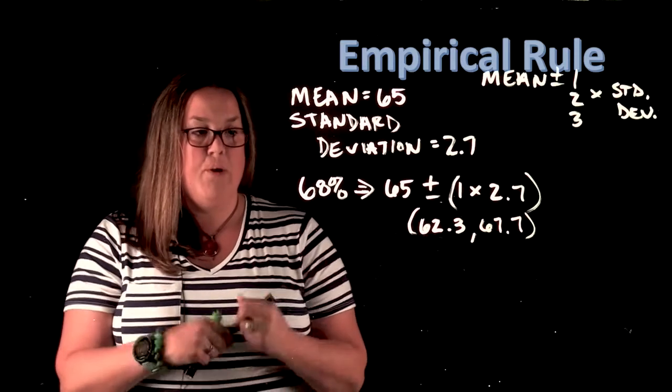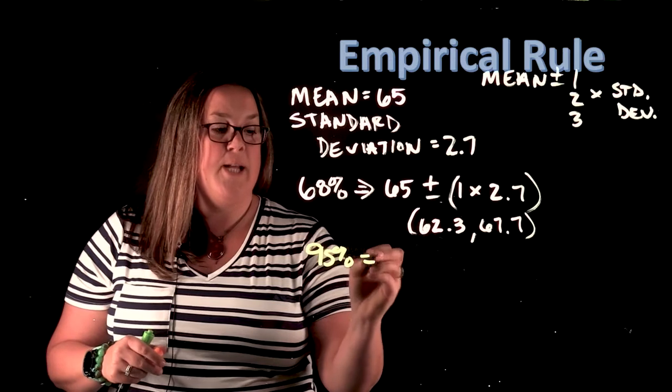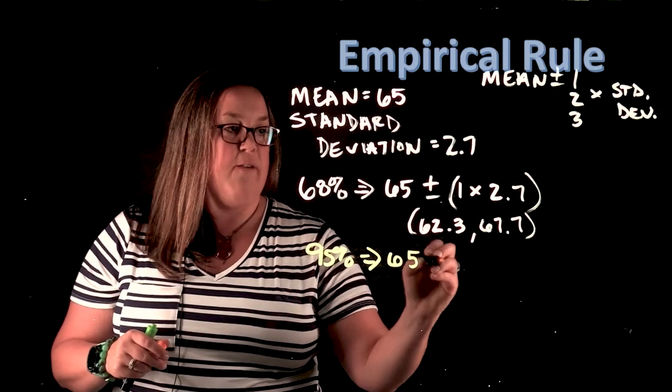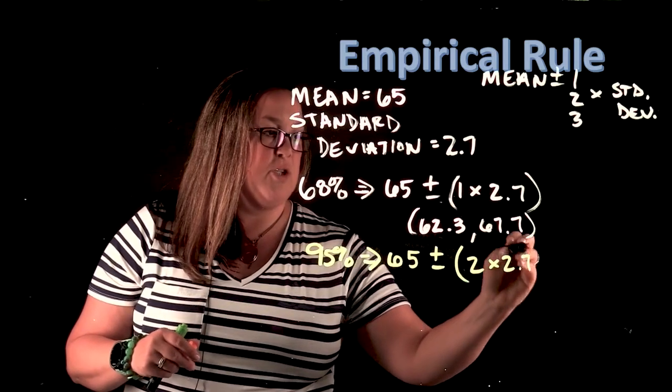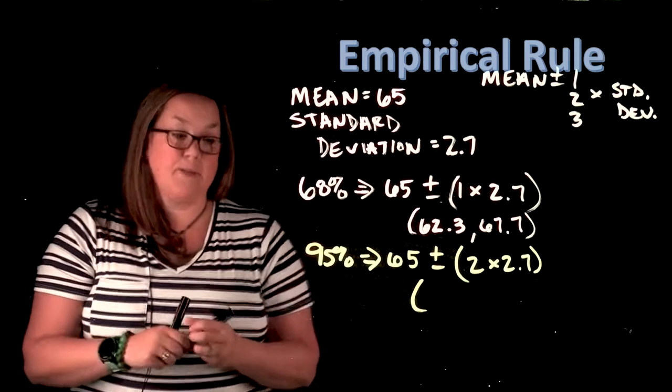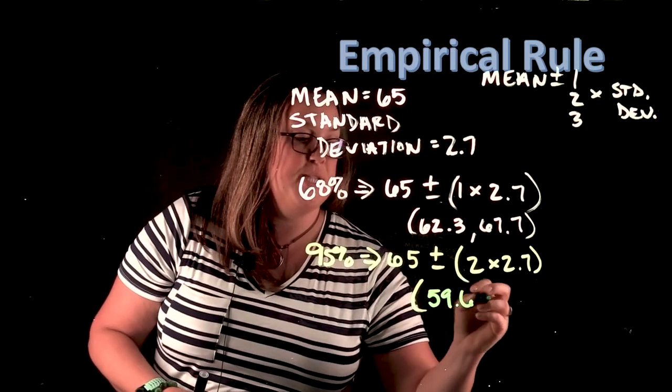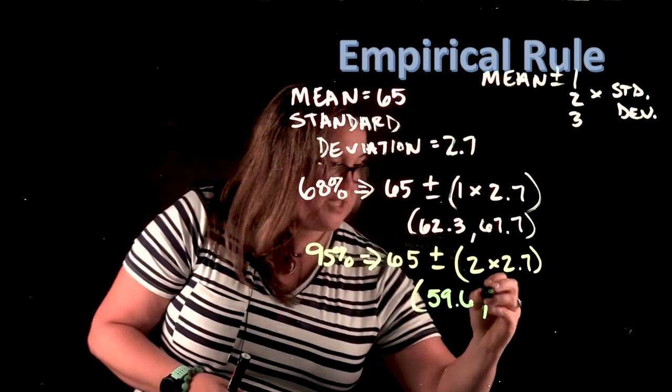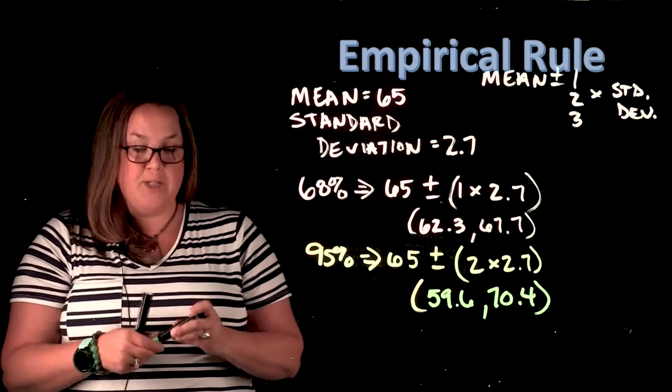The second one that the empirical rule does is 95%, and that's two standard deviations out. So it takes the mean, 65, and adds and subtracts two times the standard deviation. If you add and subtract, we would go down to 59.6 and up to 70.4, and that would contain 95% of the observations.